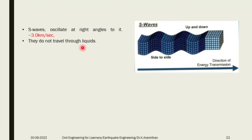The next wave is called S wave - secondary wave - which is a wave moving up and down. Its velocity is less than the primary wave; S wave has a velocity of around 3 km per second. S waves do not travel through liquids. If there is any confined aquifer while the wave is traveling, when it reaches the confined aquifer the liquid collapses the wave and it cannot pass through. Certain waves are sent back. S wave goes through up and down motion.